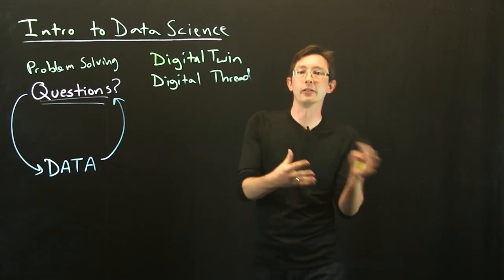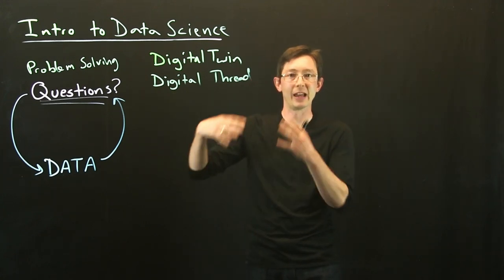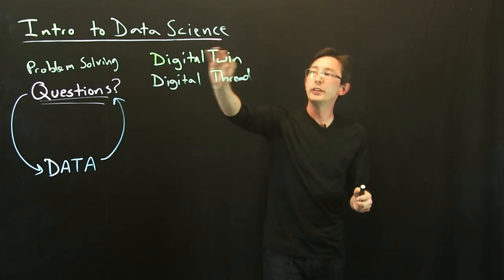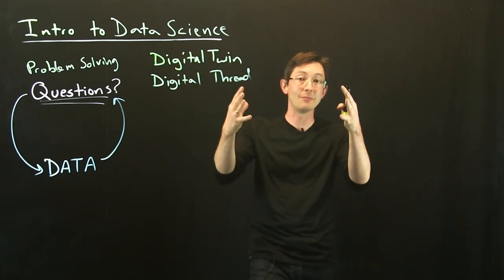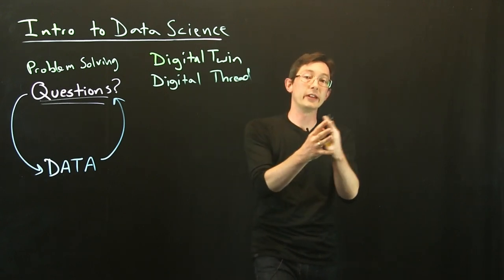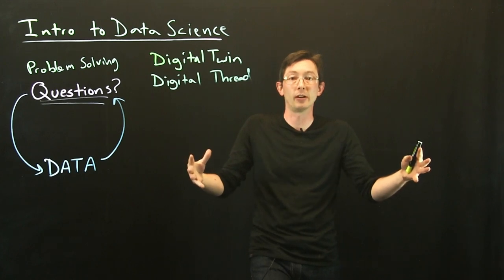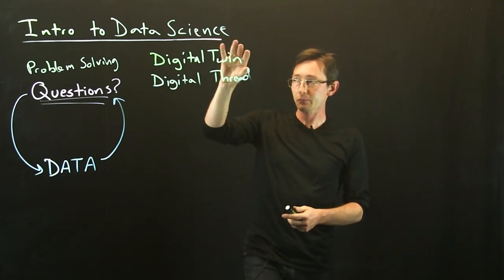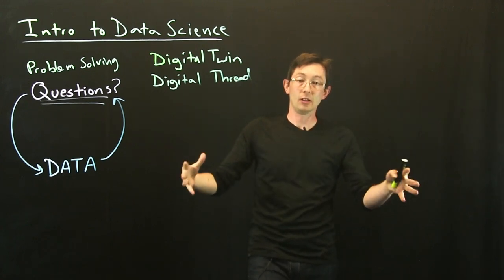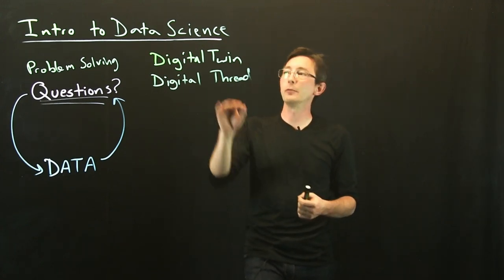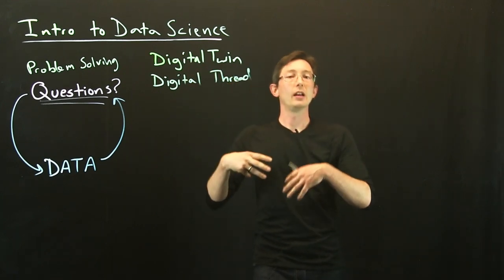This really is supposed to be a digital version of that physical entity. What's really important about these digital twins is it's not just a model, it's a model that is pinned to measurement data. You have all of this rich data about that process you're collecting.